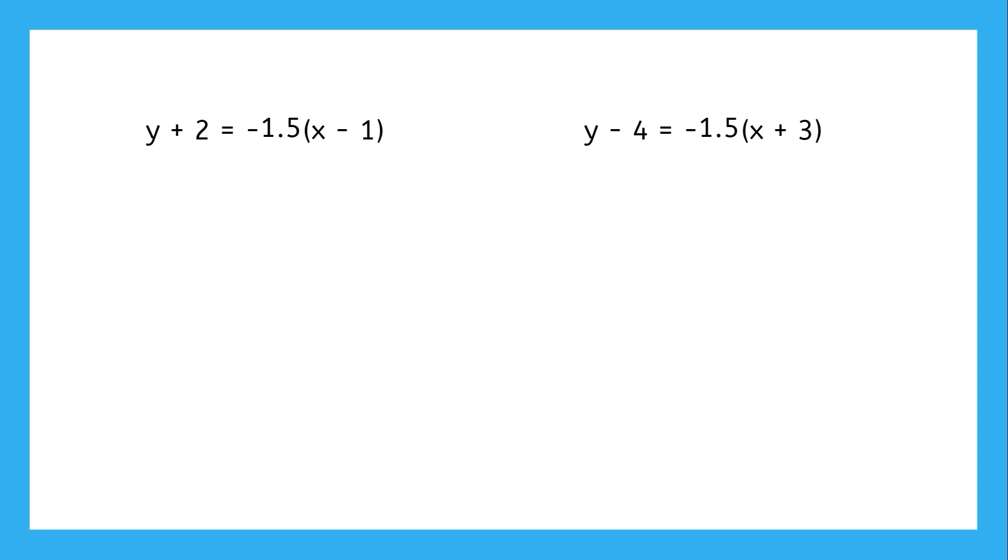For the version on the left, we distribute the negative 1.5, and then we subtract 2 from both sides. In slope-intercept form, this equation is the same as y equals negative 1.5x minus 0.5.